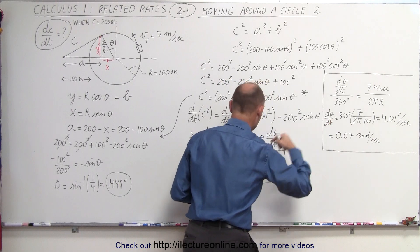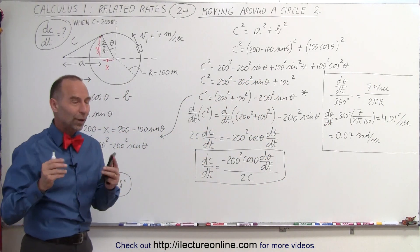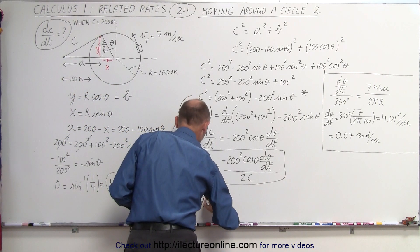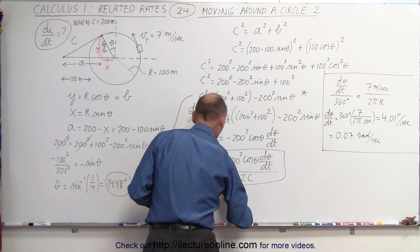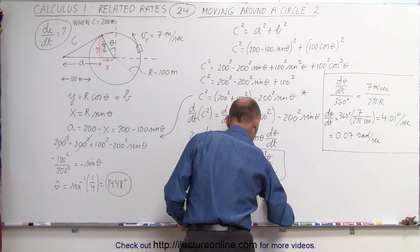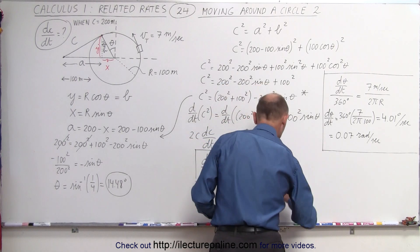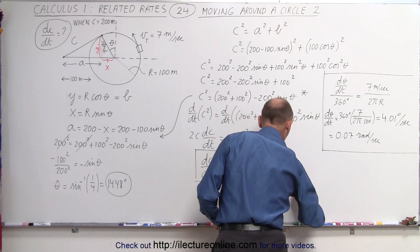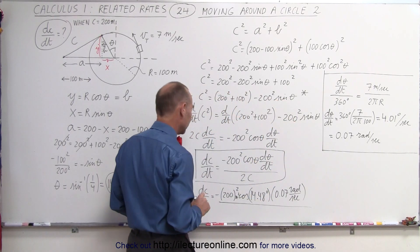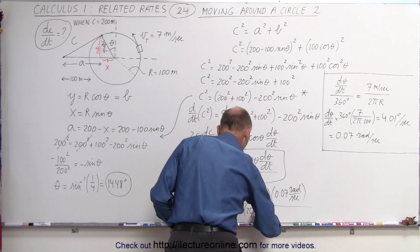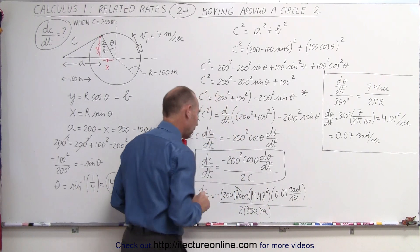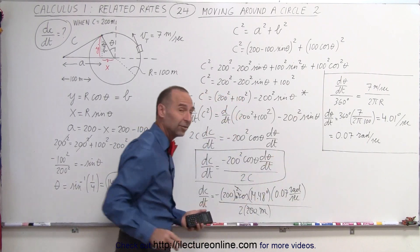Now I have dθ/dt and the angle theta. So dc/dt = −200² × cos(14.48°) × 0.07 rad/s, all divided by 2 × 200 meters. One of the 200-meter factors cancels, and the meter squared divided by meter leaves meters, while radians is dimensionless — so the result is in meters per second.